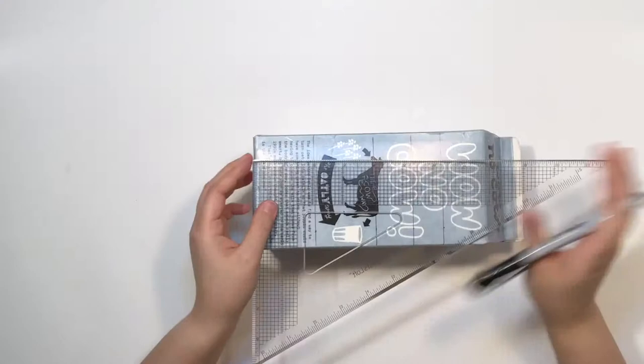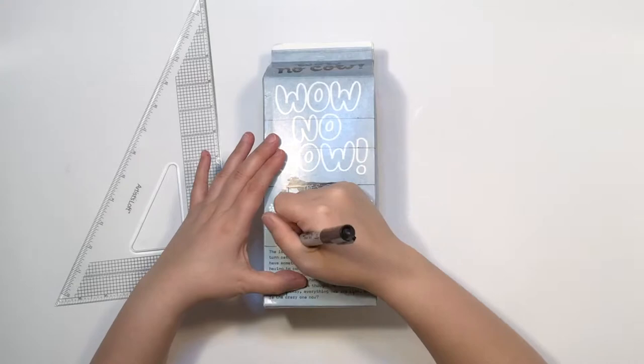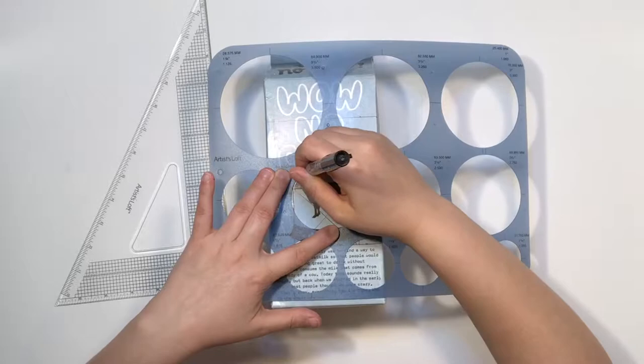Next, measure in three quarters of an inch from each side and outline a rectangle. Take your circle template and draw a little arch over the rectangle to create a door.